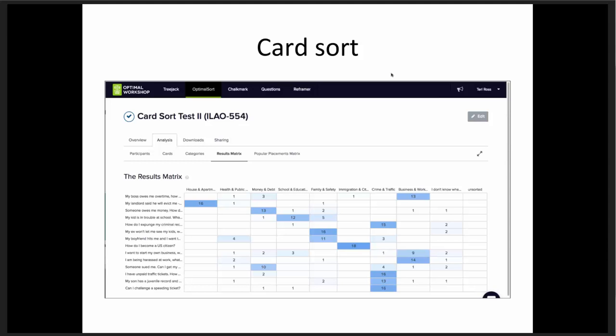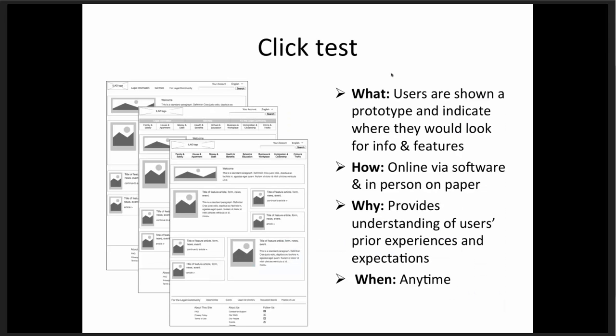Card sorts are great for understanding how people interpret the information on your website, how they might categorize it, and how you can organize your entire website or even just a small piece of it. The other type of test I'm going to talk about is a click test. This is meant to get kind of that first impression. Users are shown a prototype — even a pretty basic one — and this is particularly helpful in testing navigation options early on.